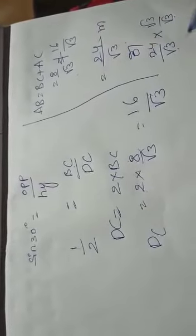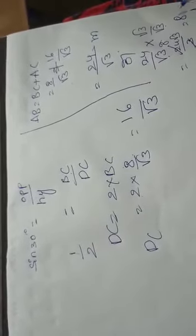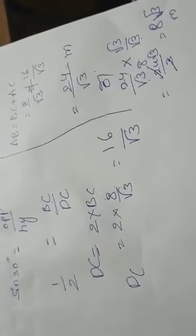The height of the tree before the storm is AB equals BC plus AC, which equals 8 by root 3 plus 16 by root 3. Taking LCM as root 3, this equals 24 by root 3. Multiplying by root 3 over root 3 gives 24 root 3 by 3, which equals 8 root 3 meters. Therefore the height of the tree AB is 8 root 3 meters.